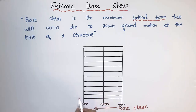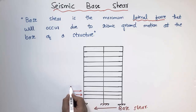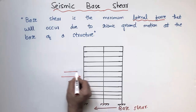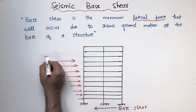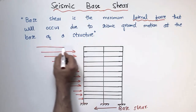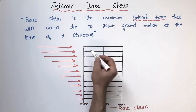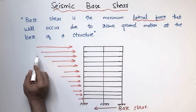This base shear is distributed throughout the height of the building to each floor. Each floor will take load distributed throughout the height of the building. As the height of the building increases, more lateral force acts on the building, so high-rise buildings have a higher chance of deflecting at the top.